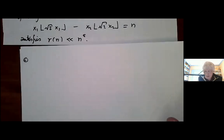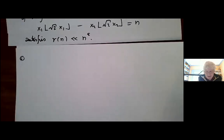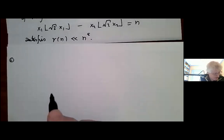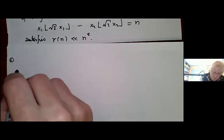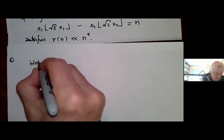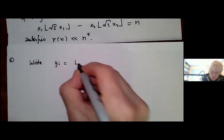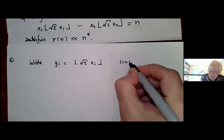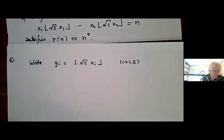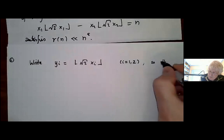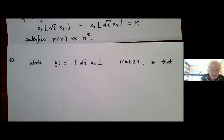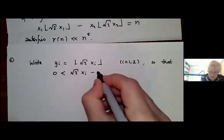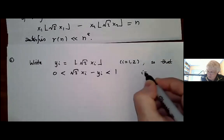Here's the strategy — this is the only idea that really plays a role, and then you have to use the idea. The idea, as with most of my ideas, is very unimpressive. Let's write y_i for the floor function of √2 · x_i, when i equals 1 and 2. The profound implication of this is that √2 · x_i minus y_i is between 0 and 1, when i equals 1 and 2.